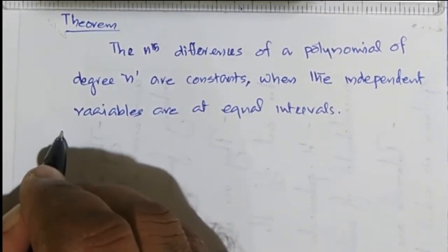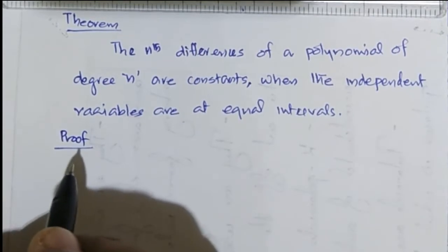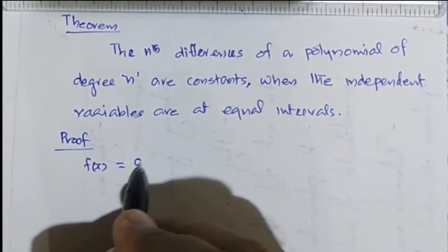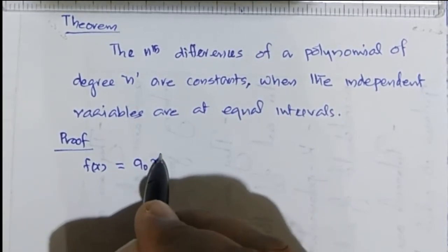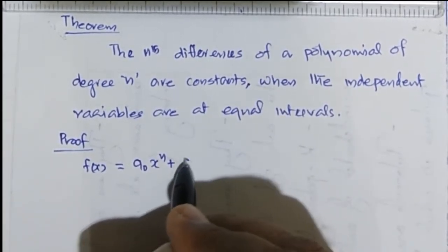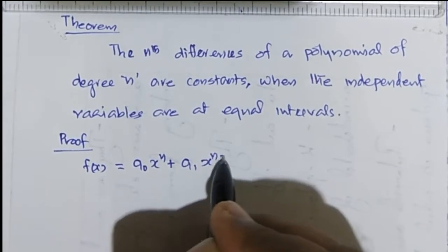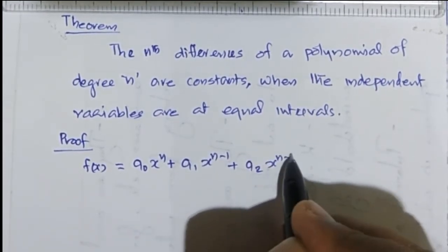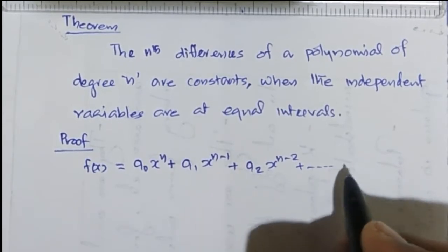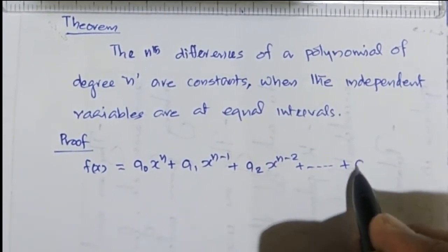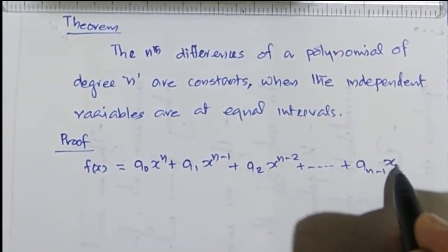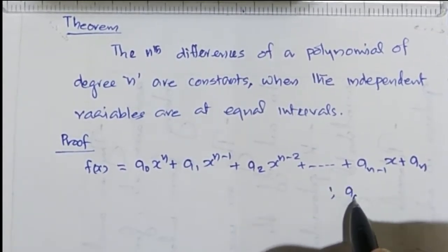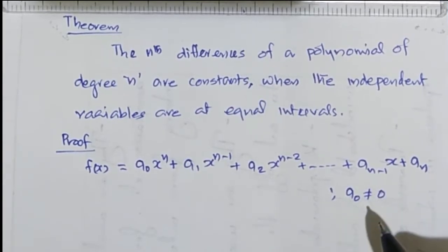We need to find the proof. Let the polynomial be f(x) = a0 x^n + a1 x^(n-1) + a2 x^(n-2) + ... + a(n-1) x + an, where a0 is not equal to 0. These are the n+1 terms of the polynomial f(x).